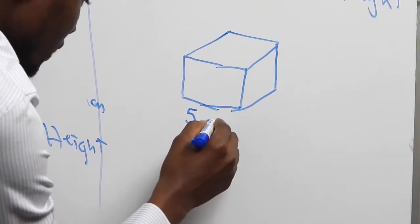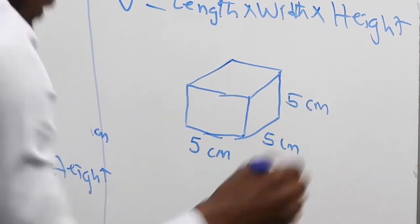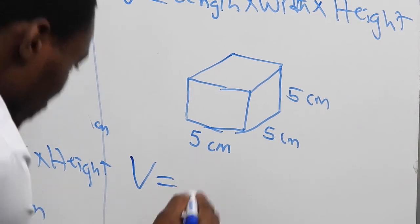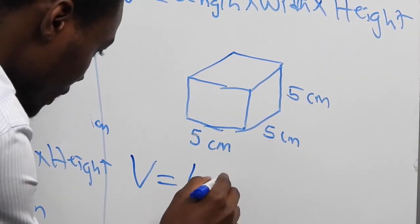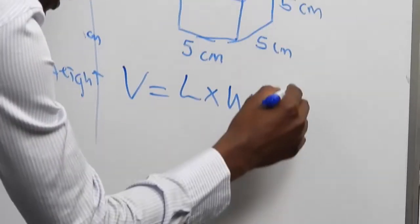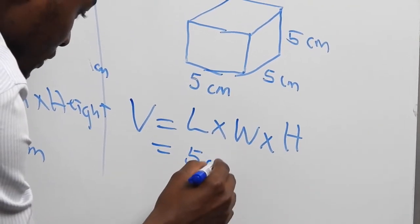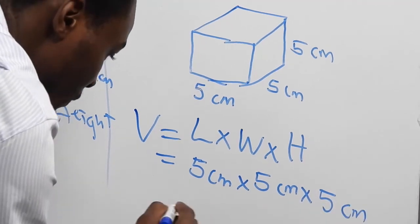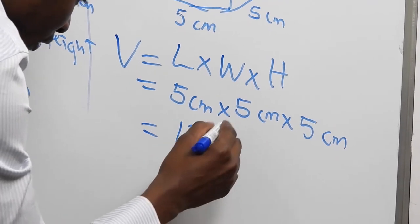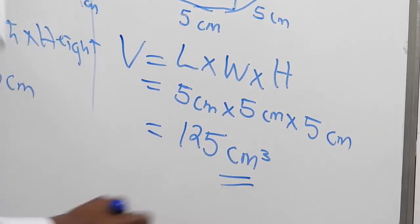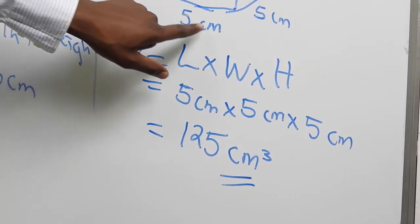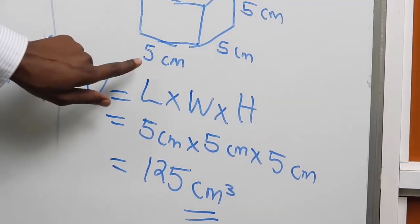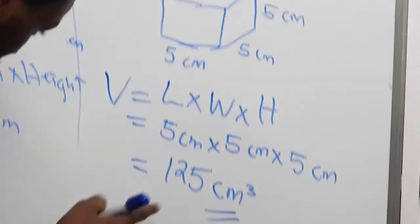Suppose we have each side equal to 5 centimeters — 5 centimeters, 5 centimeters, 5 centimeters. Note that each of the sides of this cube is 5 centimeters. The volume will be given by length times width times height, which will be equal to 5 cm times 5 cm times 5 cm, which equals 125 cubic centimeters. The volume is 125 cm³ and not just 125, because we have been given the length of the sides in centimeters.